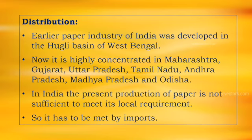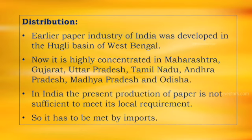Distribution of paper industries in India. Earlier, the paper industry of India was developed in the Hooghly River Basin of West Bengal. Now, paper industry is highly concentrated in Maharashtra, Gujarat, Uttar Pradesh, Tamil Nadu, Andhra Pradesh, Madhya Pradesh, and Odisha. In India, at present, the production of paper is just not sufficient to meet its local growing requirements. Therefore, India has to import paper from other countries to meet its growing demand.